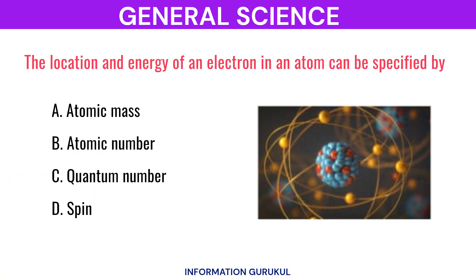The location and energy of an electron in an atom can be specified by quantum number.